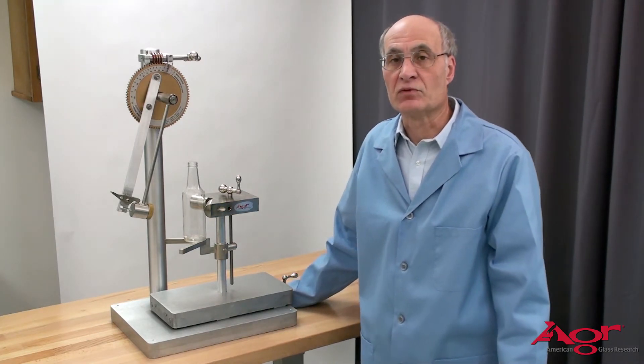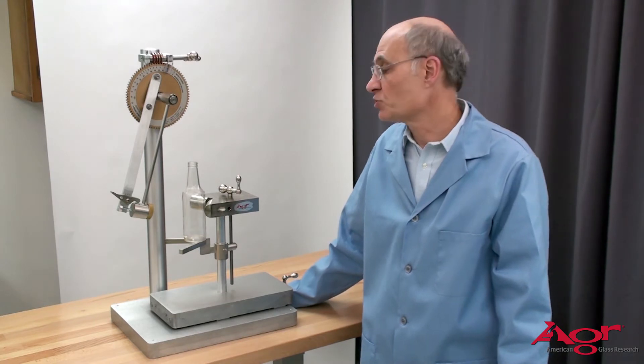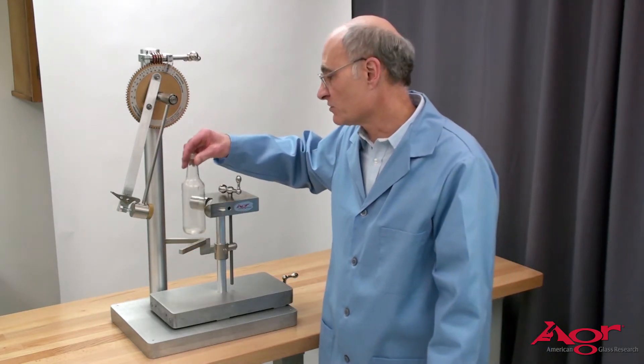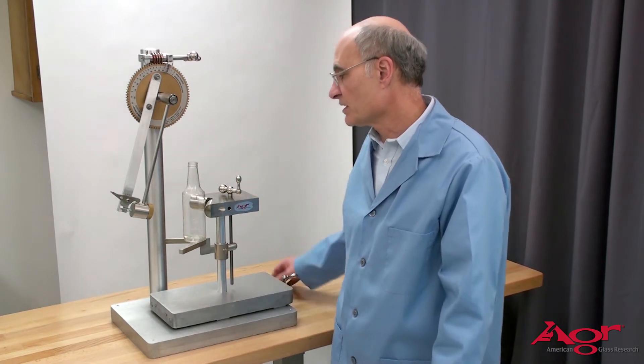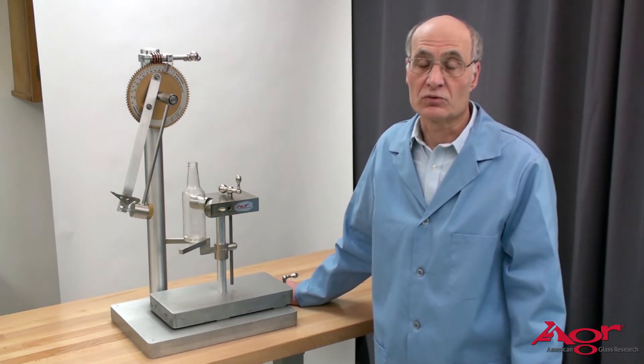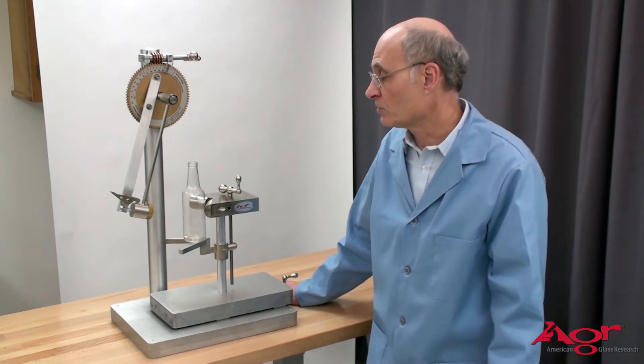There are several different ways of doing impact testing. Most commonly when we do testing at AGR we tape the bottle first in order to keep the pieces together to allow for fracture analysis. The nice thing about that is that you do not have to worry about losing the origin in most cases and you can look at it to see the specific type of defect that caused it to fail.